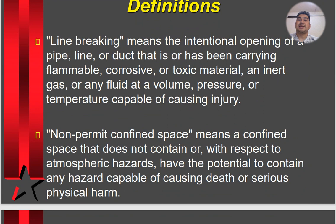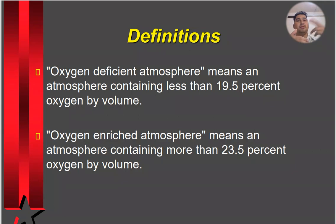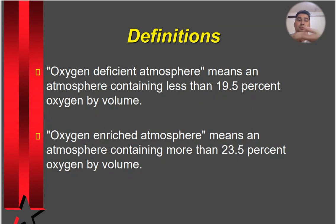Non-permit confined space means a confined space that does not contain, or with respect to atmospheric hazards does not have the potential to contain, any hazard capable of causing death or serious physical harm. Oxygen-deficient atmosphere means an atmosphere containing less than 19.5% oxygen by volume — when oxygen level goes below 19.5%, people can feel suffocated. Oxygen-enriched atmosphere means any atmosphere where the oxygen level is 23.5% or above.